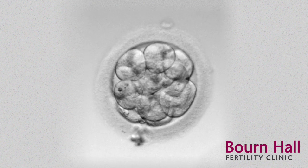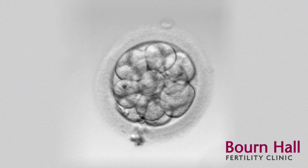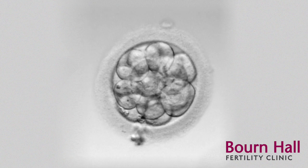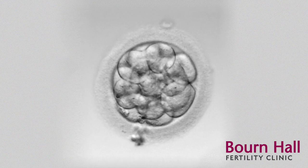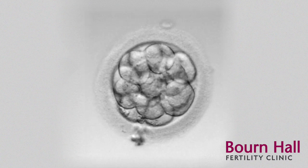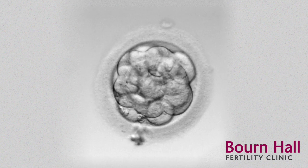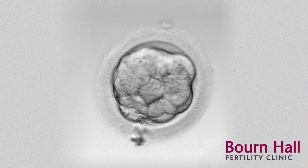This embryo has managed to keep dividing, and it's now at 10, 12, 14, 16 cells, becoming too difficult to count by eye. What we now see happening is that these cells will merge together in a process known as compaction.